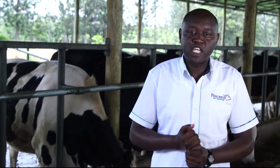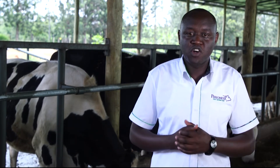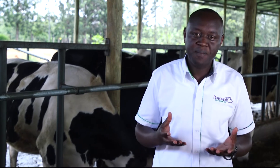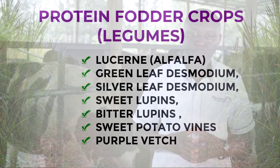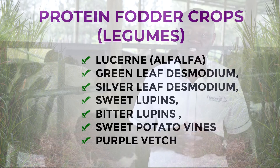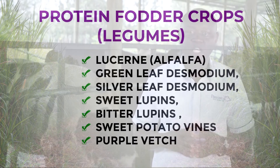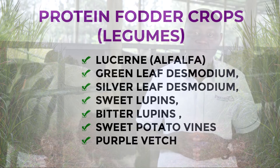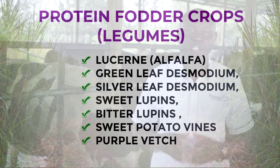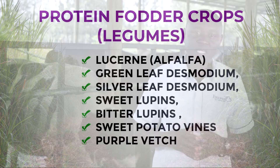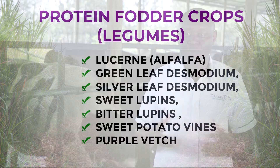The major protein fodder crops grown in Kenya are lusanne, also known as alfalfa, green leaf desmodium, silver leaf desmodium, sweet lupines, bitter lupines, sweet paratoviles, and purple veg.